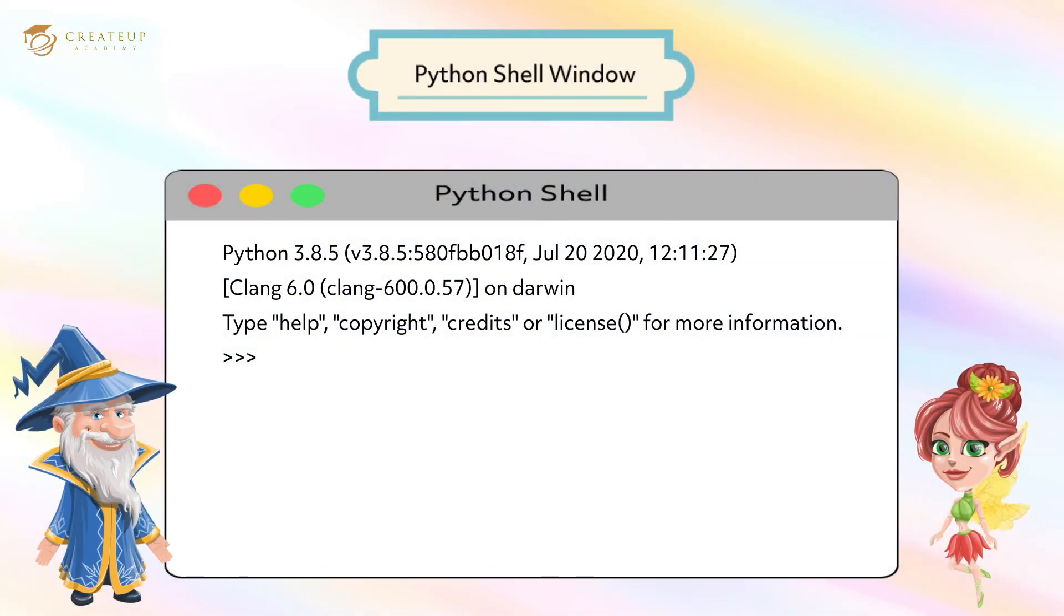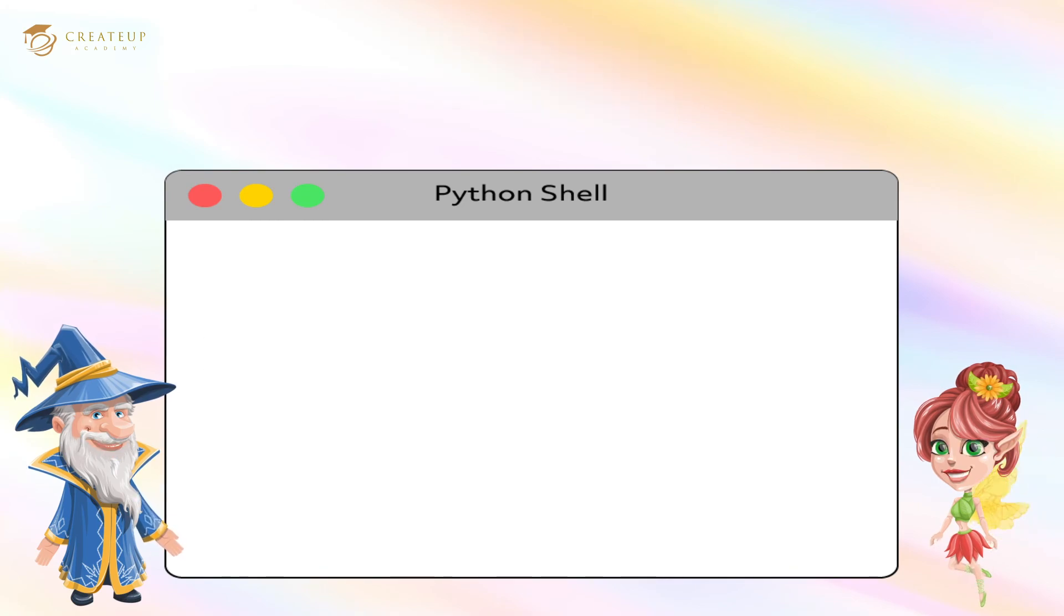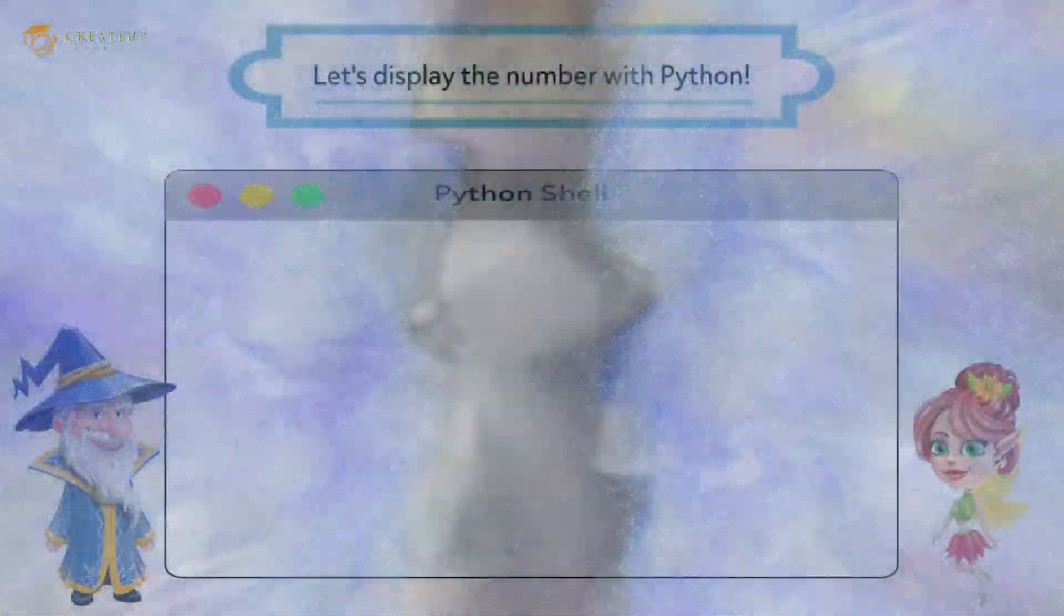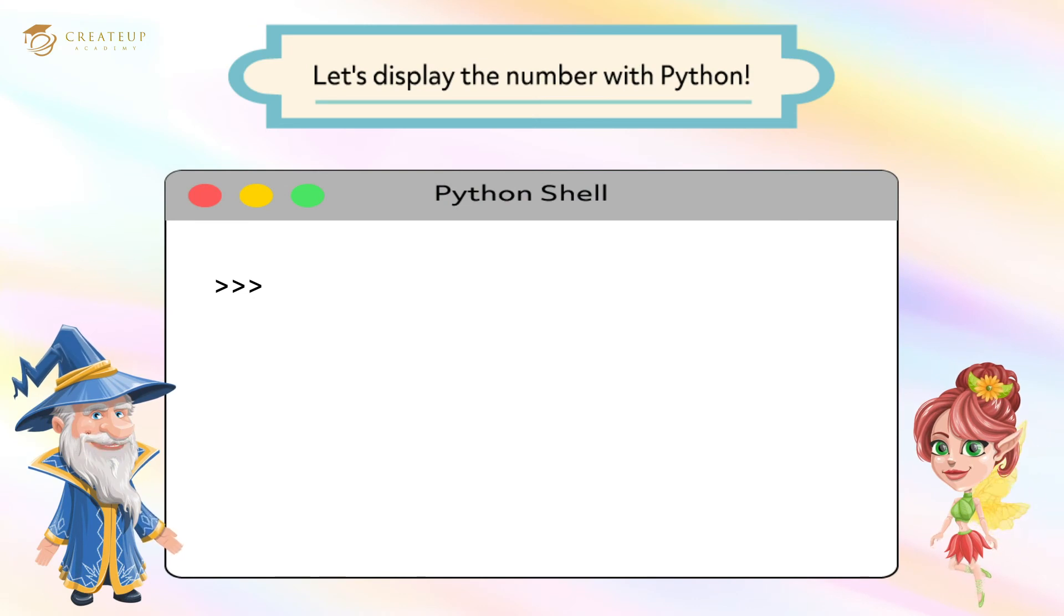Let's display numbers with Python. There are many things on the screen, but the last symbol that appears is called a prompt. This means IDLE is saying, 'Come on, give me anything.' First, let's display the numbers.